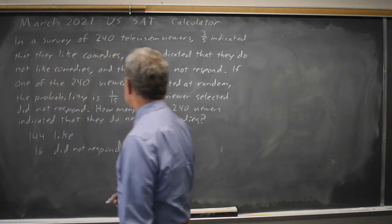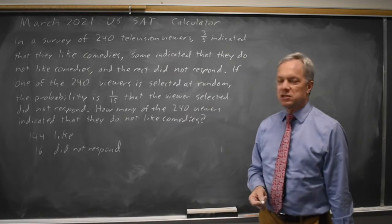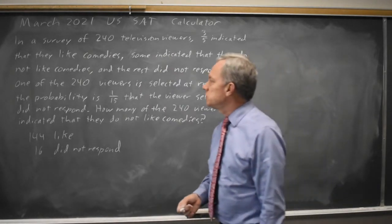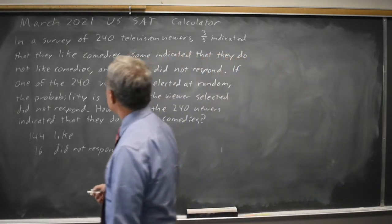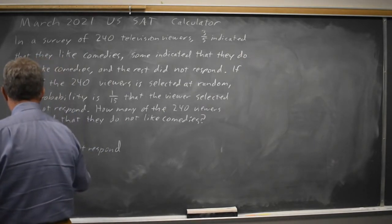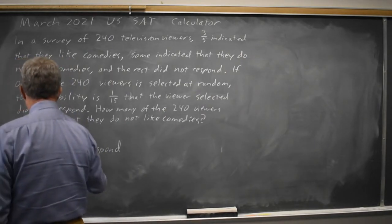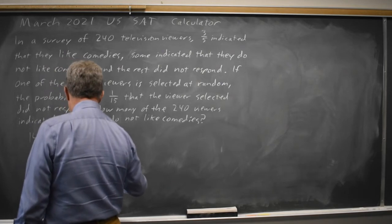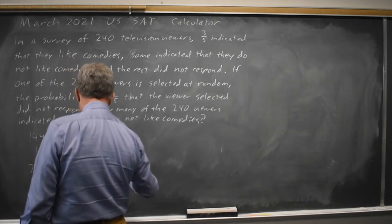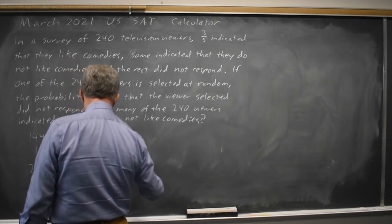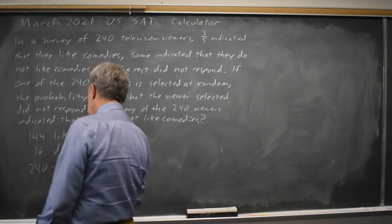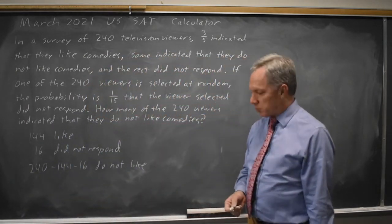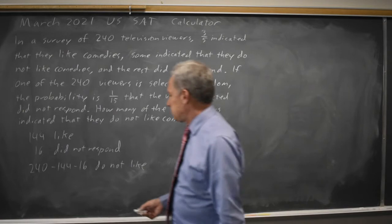The question is: how many said they do not like comedies? That would be 240 minus 144 minus 16 do not like comedies. And that's 240 minus 160, which is 80.